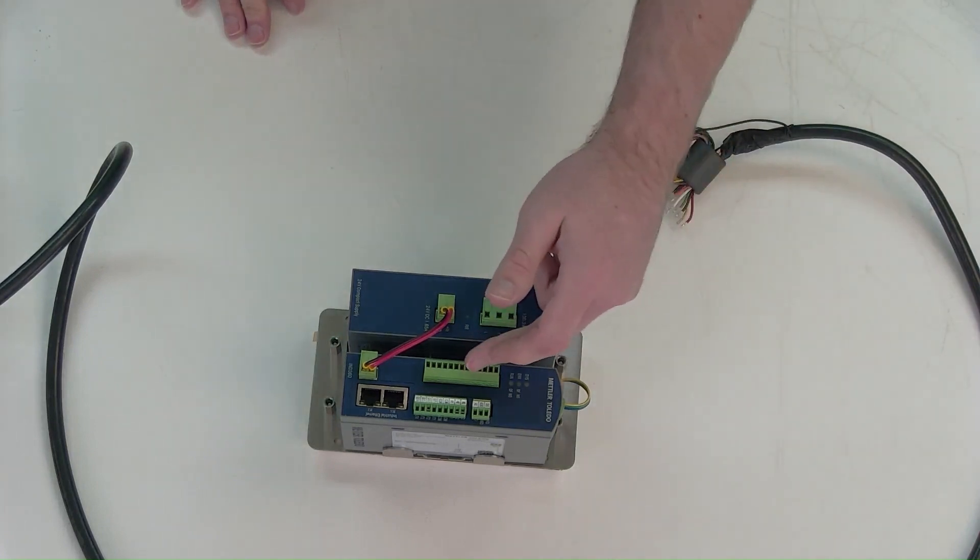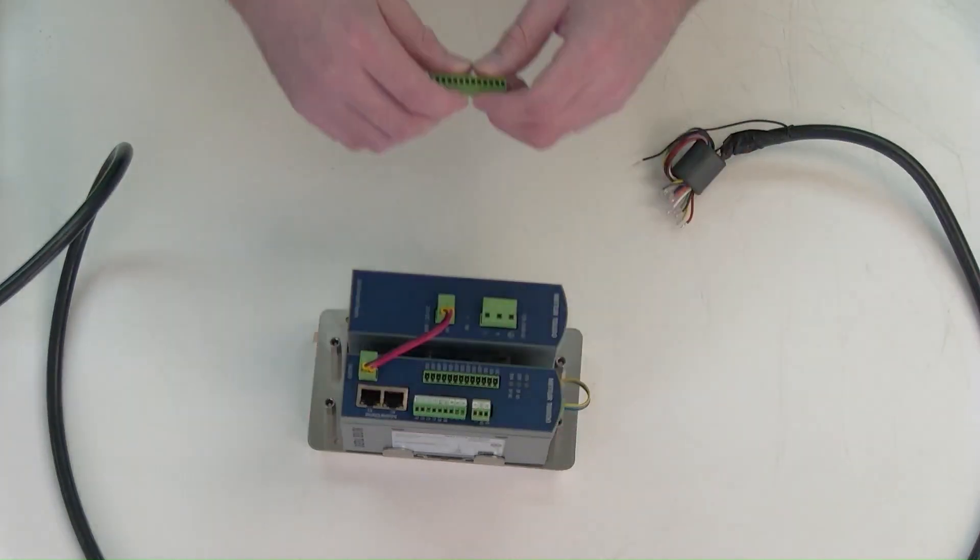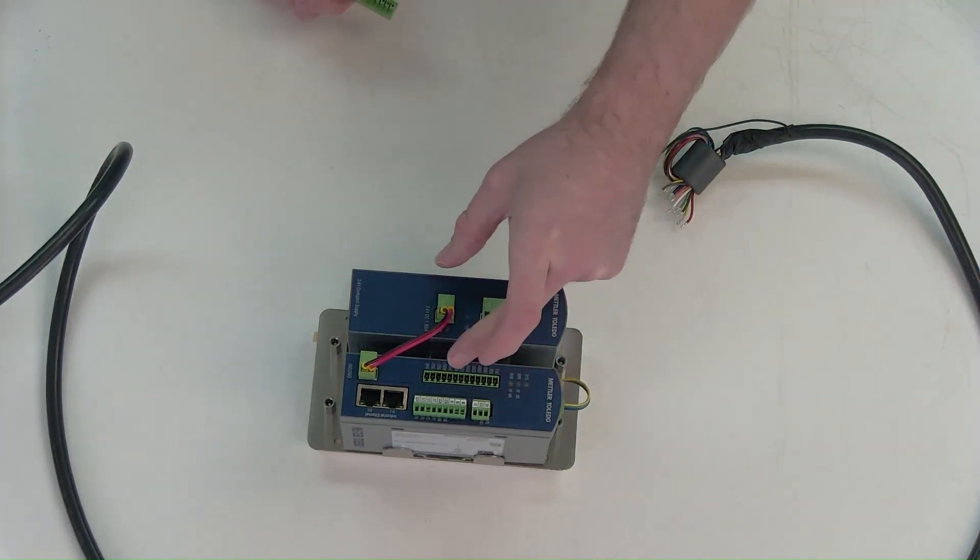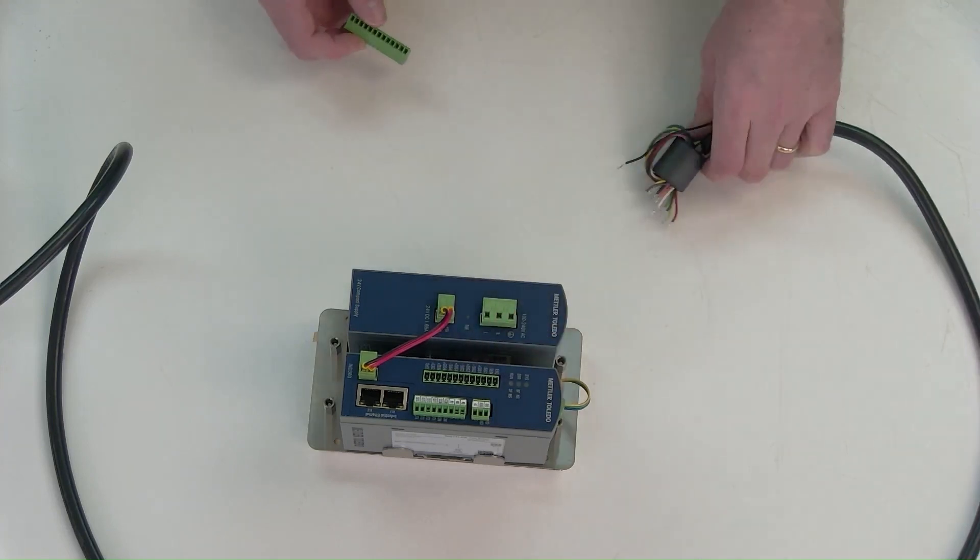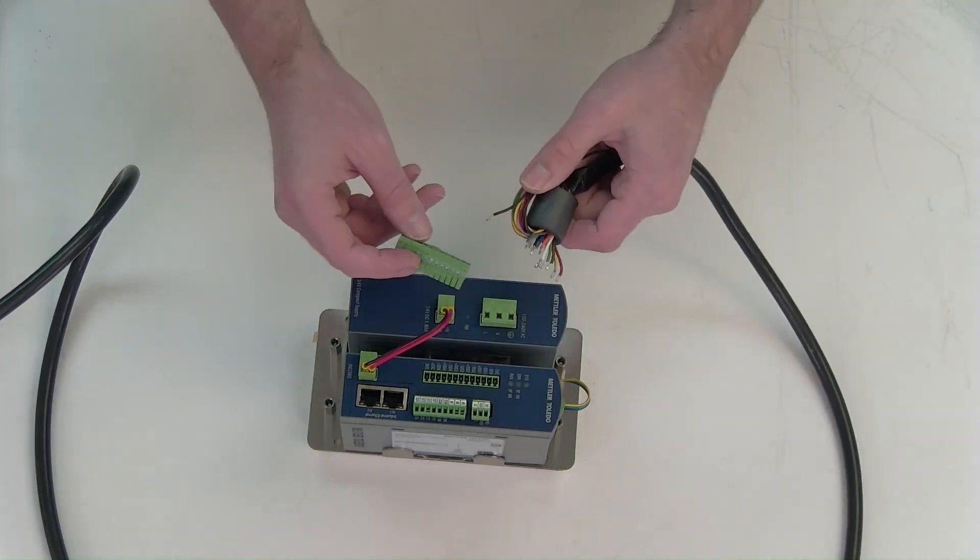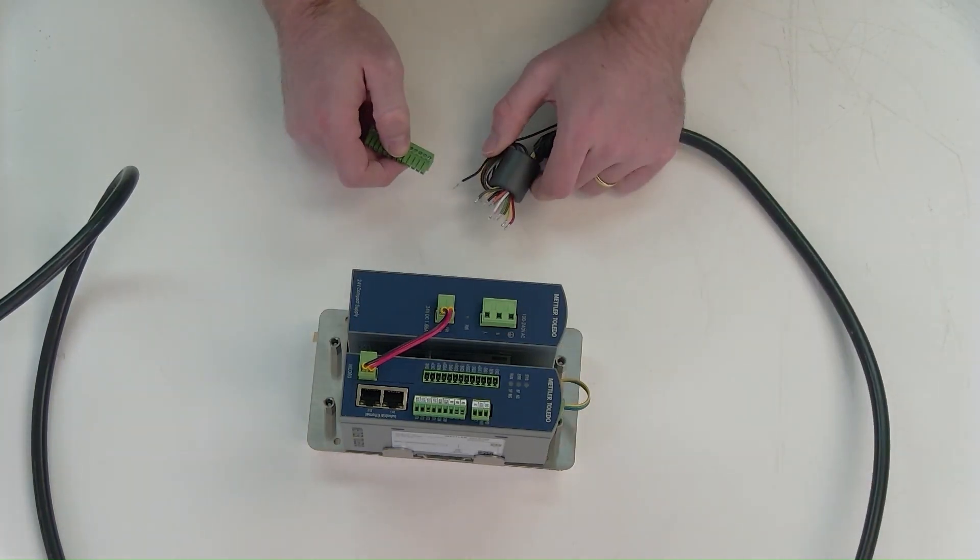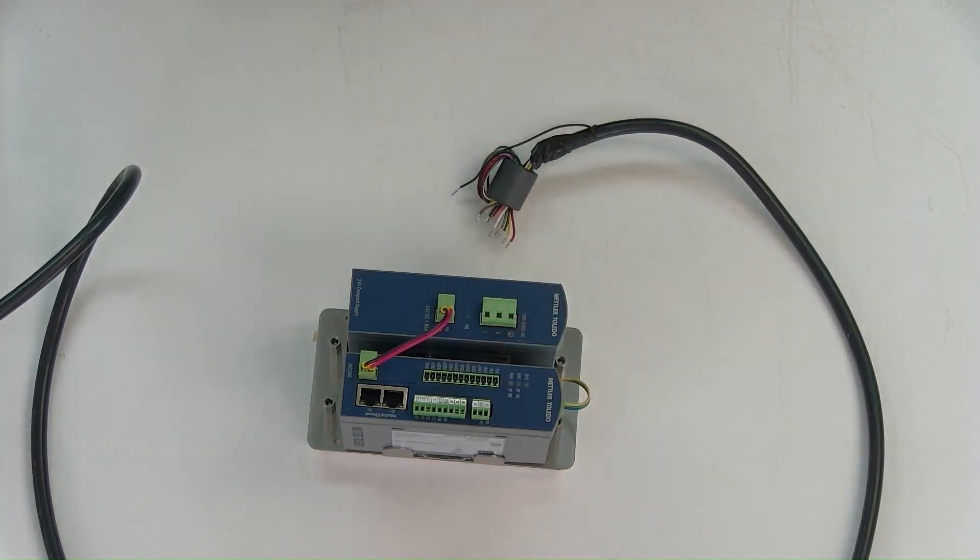Now we have our scale connection here. I'm going to remove that connector. We can see the individual wires labeled for the termination. Again, I'm going to bring in and follow the wiring diagram just as I did on the junction box side, wire these connections, and we'll see how it looks at the end.